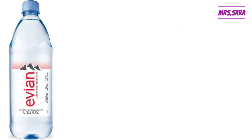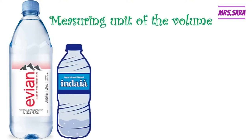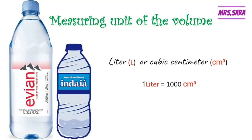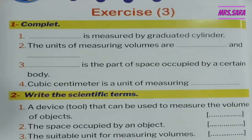Look at this bottle of water. The water takes up space inside this bottle, so the water here has volume. Can you read what is written here? It says 1L. The measuring unit of volume is the liter or the cubic centimeter. One liter equals one thousand cubic centimeters — just like one kilogram equals one thousand grams in mass.